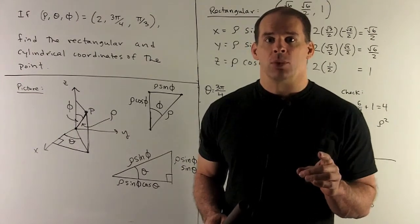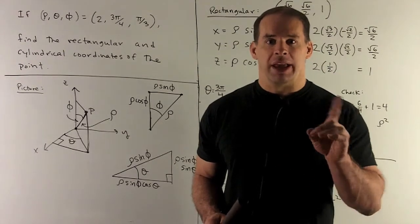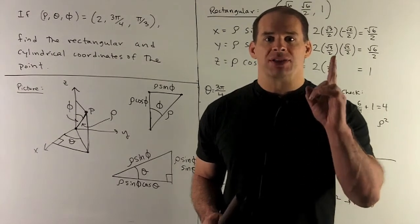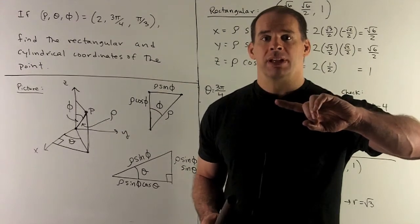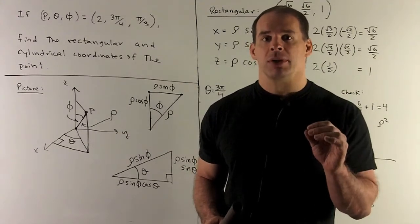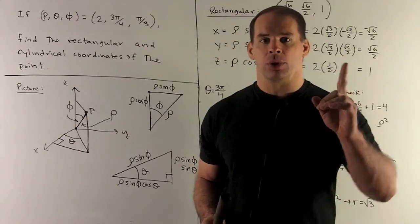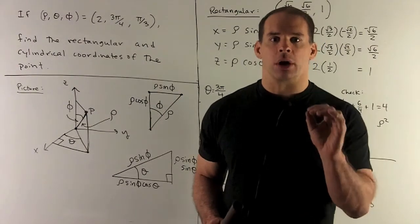To get phi, take the z-axis and our point, and then take the plane formed by the axis and our point. If I start at the positive z-axis and come down until I hit my point in that plane, that's phi. So phi is between zero and pi. We get pi if we go all the way down to the negative z-axis. So those are the coordinates.